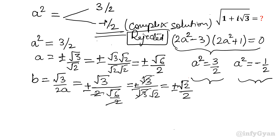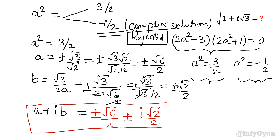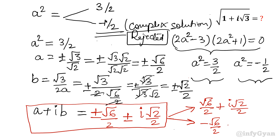So our answer is clear. The square root was a plus ib. So the answer is plus or minus root 6 over 2 plus or minus iota times root 2 over 2. Bifurcating into two values: root 6 over 2 plus iota root 2 over 2, or minus root 6 over 2 minus iota root 2 over 2.